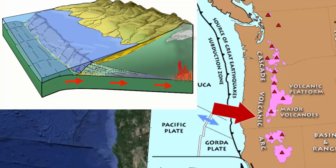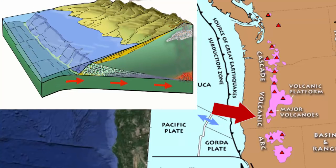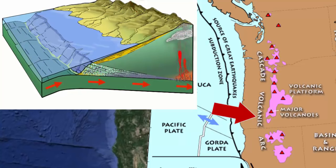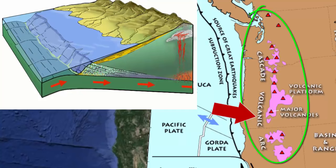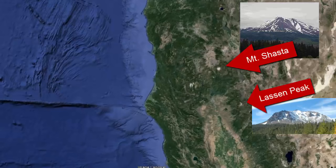That produces a convergent plate boundary, where a plate with an oceanic crust leading edge collides with a plate with continental crust on the edge. The result is subduction, a trench, earthquakes, and inland an active chain of volcanoes. This volcanic chain is known as the Cascade Mountains, and in California is expressed with the active volcanoes of Mount Lassen and Mount Shasta.